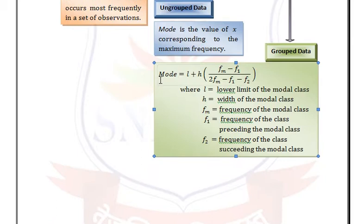In frequency distribution ungrouped data, mode is the value of x corresponding to the maximum frequency. In frequency distribution grouped data, the formula is: Mode = L + h × (fm − f1) / (2·fm − f1 − f2), where fm is the maximum frequency, f1 is the frequency preceding the maximum frequency, and f2 is the frequency succeeding the maximum frequency.